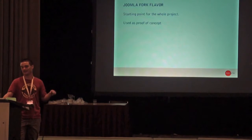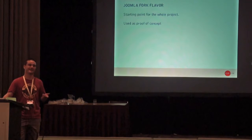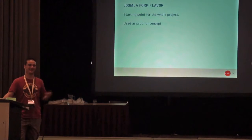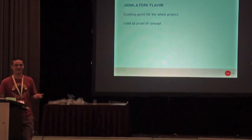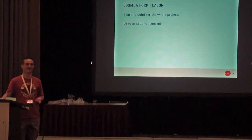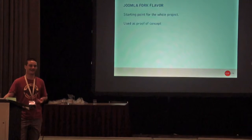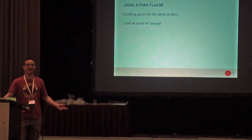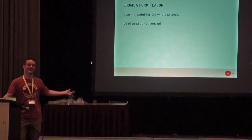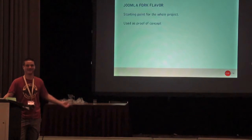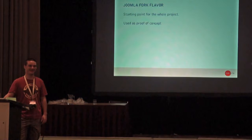The Joomla fork flavor is the starting point for the whole project and is used as a proof of concept. It's not going to be released with any community built around it — it's just the code. It's factually a fork because I needed to change like 70 files to make it work, so I cannot call it anything else. If this existed on the SVN of joomla.org it would be called a branch — it's just a matter of words.